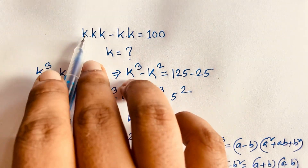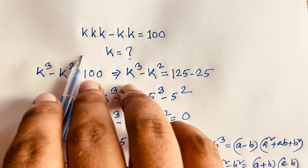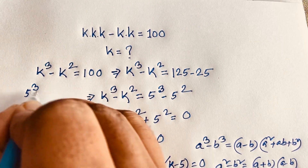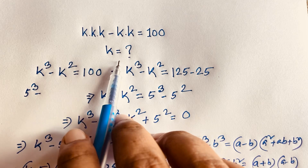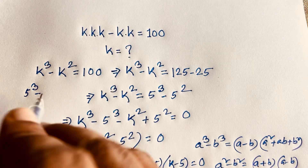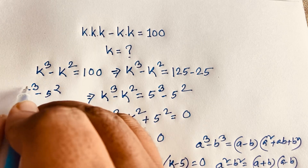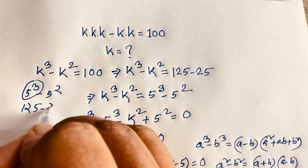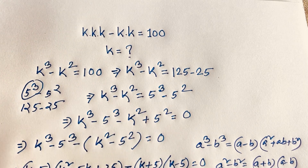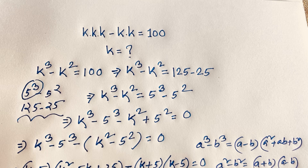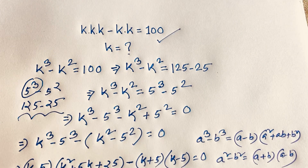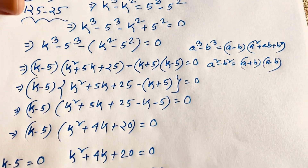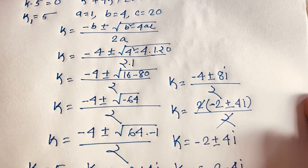Let's verify: the original question is k³ - k² = 100. With k = 5: 5 × 5 × 5 = 5³ = 125, and 5 × 5 = 5² = 25. So 125 - 25 = 100. Left-hand side equals right-hand side. Thank you all — if you enjoyed this video, please subscribe to my channel. Goodbye, take care.